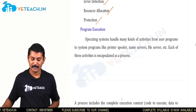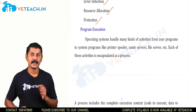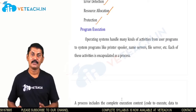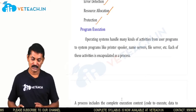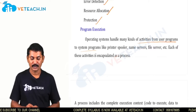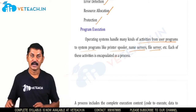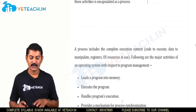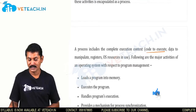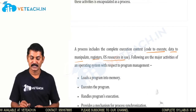For program execution, the operating system handles it by allocating CPU time or resource time. The operating system handles many kinds of activities from user programs to system programs like printer spoolers, name servers, and file servers. A process includes the complete execution context — the code to execute, data to manipulate, registers, and OS resources in use.